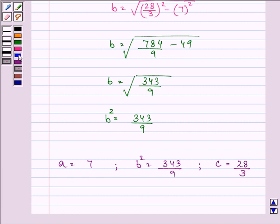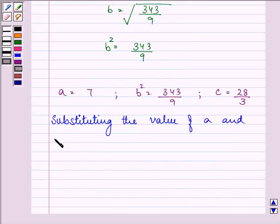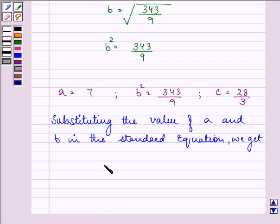Now on substituting the values of a and b in the standard equation, x square by a square minus y square by b square, that is 343 by 9, is equal to 1.